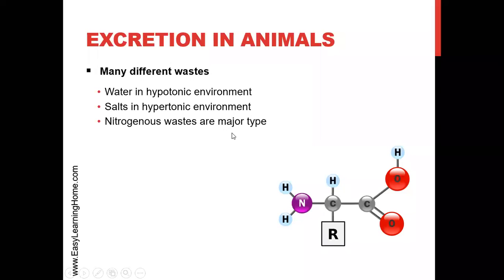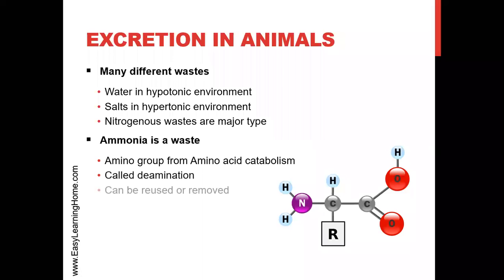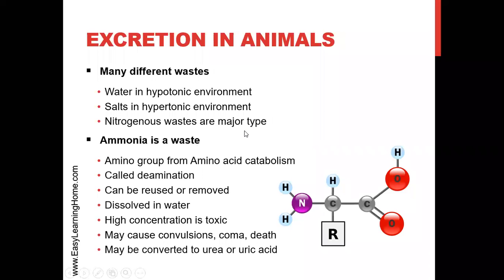Nitrogenous waste is produced in the body. The harmful chemical in nitrogenous waste is ammonia. We have seen that this is an amino acid, and at the center of an amino acid there is a carbon, with a hydrogen attached, a C double bond OOH carboxyl group,